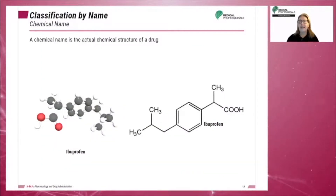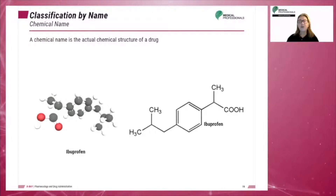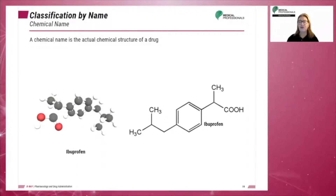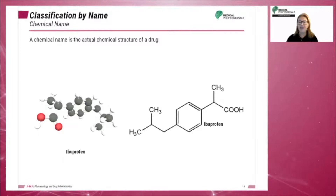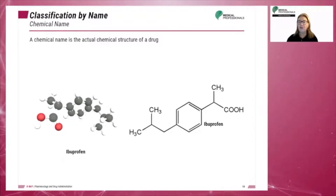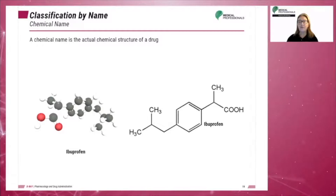The chemical name of a drug will describe the actual chemical structure of a drug. For example, C13H18NO2 is the molecular formula for ibuprofen.